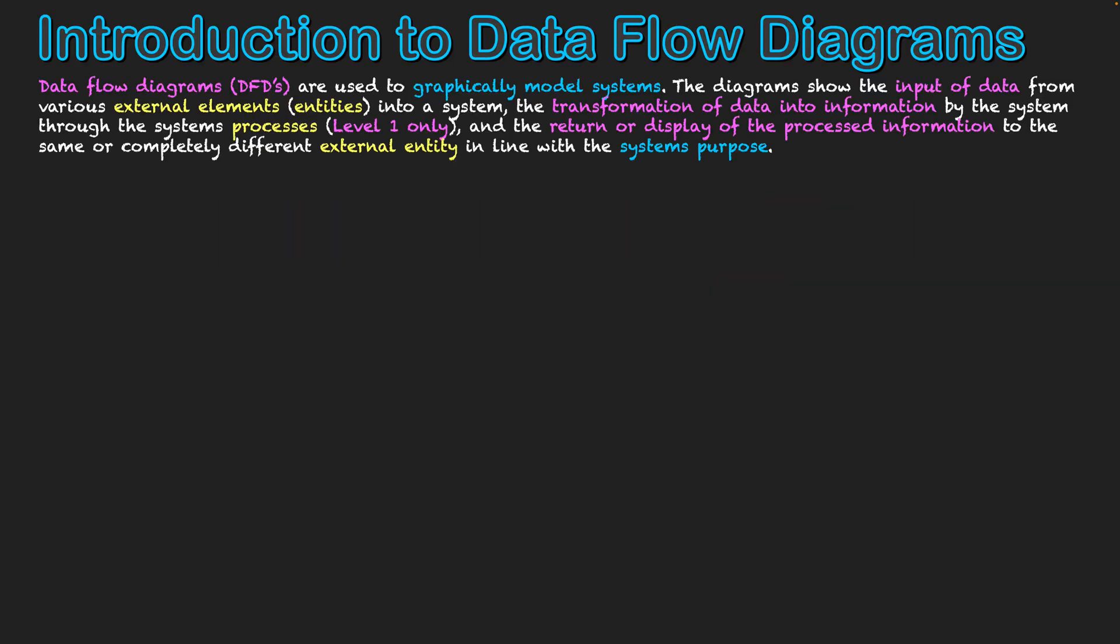A Dataflow Diagram is used to graphically model systems. The diagrams show the input of data from various external elements, known as external entities, into a system, the transformation of data into information by the system through the system's processes, which is visible at a level 1 level only, and then the return or display of processed information back to either the same or a completely different external entity in line with the system's purpose.